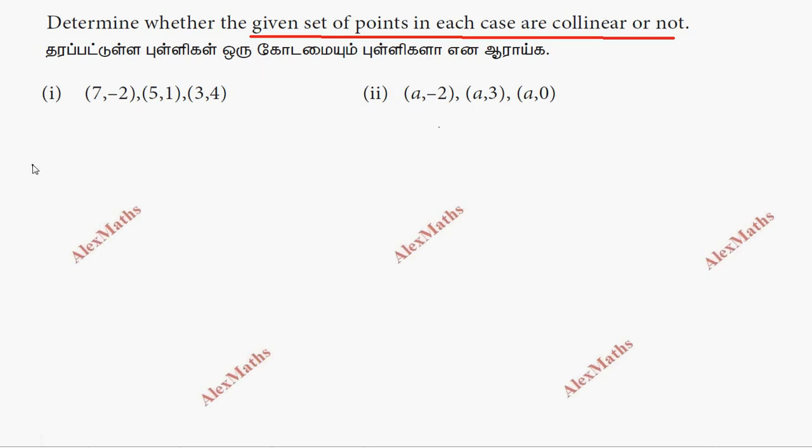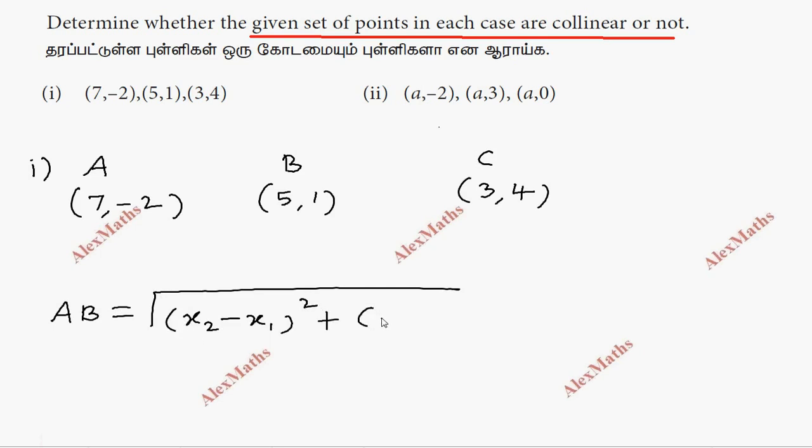We have three points. A is 7, minus 2. B is 5, 1. And C is 3, 4. We have a distance formula: root of x2 minus x1 whole square plus y2 minus y1 whole square.